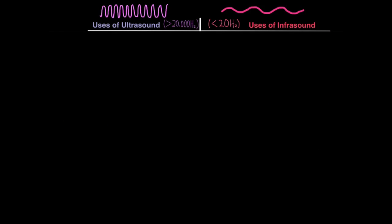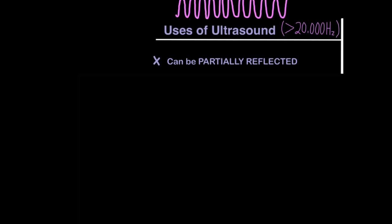Now let's look at the properties and uses of ultrasound and infrasound. One of the most important properties of ultrasound with its short wavelength and very high frequency is it can be partially reflected. Just like with light, as sound travels from one medium to another of different density, some of it will travel through and refract, but some of it also gets reflected. This is very useful to us.